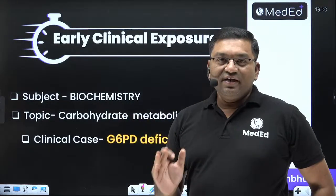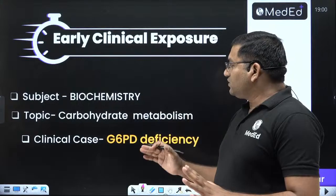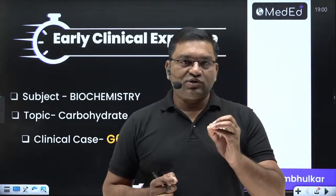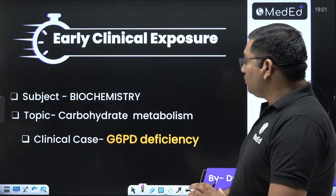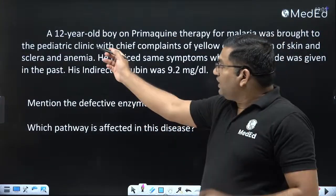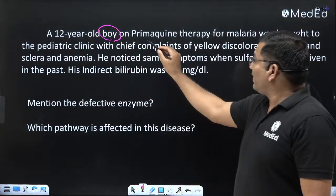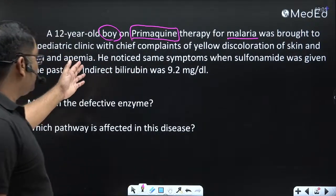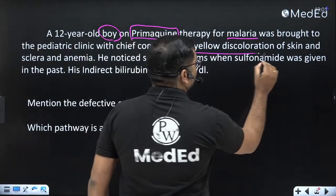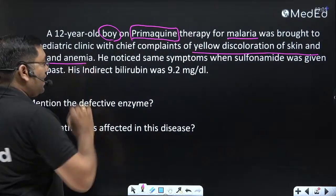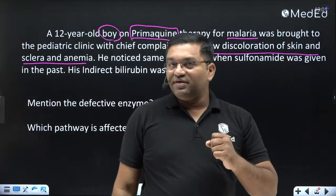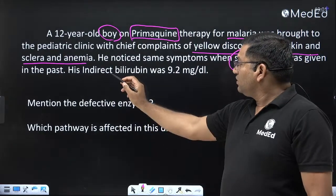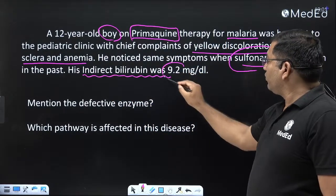Let's start with the early clinical exposure topic. Today's topic of discussion is from Carbohydrate Metabolism, and the clinical case is G6PD deficiency — glucose-6-phosphate dehydrogenase deficiency. The case: a 12-year-old boy on Primaquine therapy for malaria was brought to the pediatric clinic with complaints of yellow discoloration of skin and sclera, and anemia. He noticed the same symptoms when sulfonamide was given in the past. His indirect bilirubin was 9.2 mg/dL.